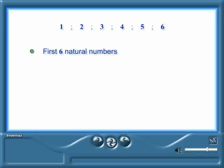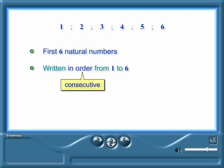This pattern consists of the first six natural numbers. The numbers are written in order from one to six. When numbers are written in order, we say that they are consecutive numbers.